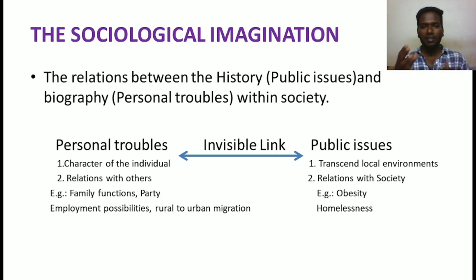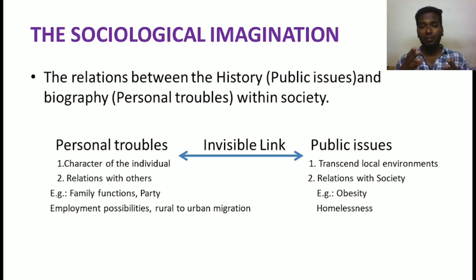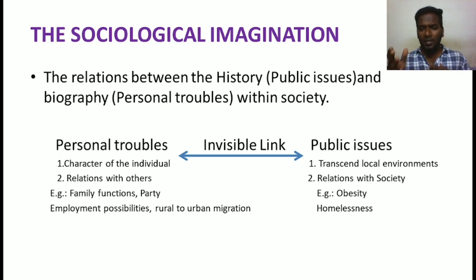Moving on to the simple definition: sociological imagination is the relation between history — that is, public issues — and biography — that is, personal troubles — within society. Let's take obesity and homelessness as examples of public issues in contemporary society.